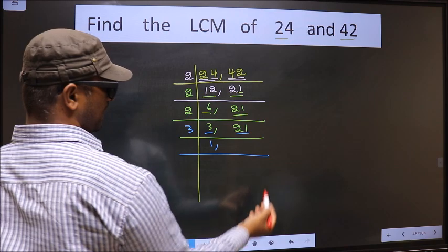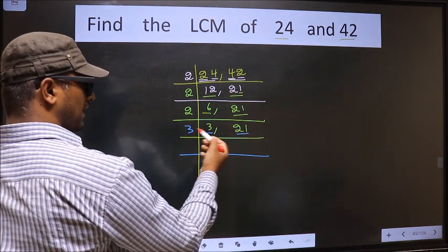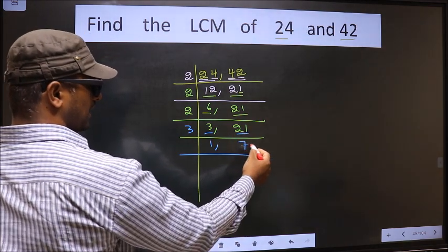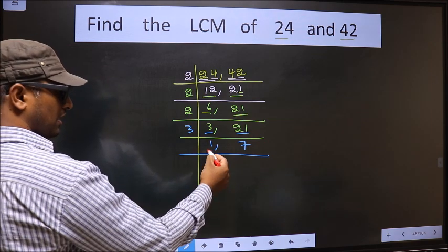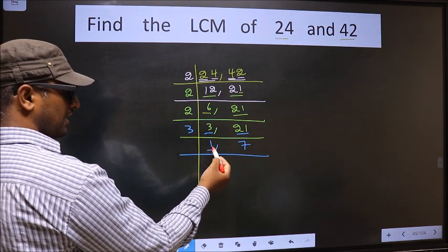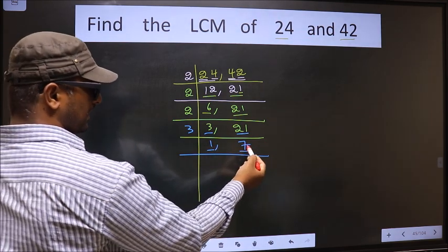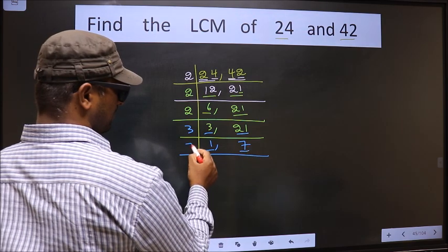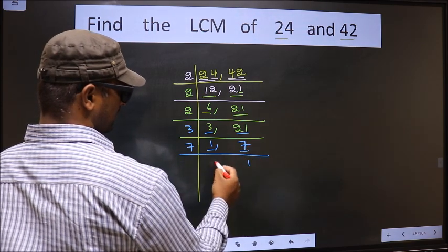The other number is 21 — when do we get 21 in the 3 table? 3 times 7 is 21. We got 1 here, so focus on the other number, that is 7. 7 is a prime number, so 7 times 1 is 7.